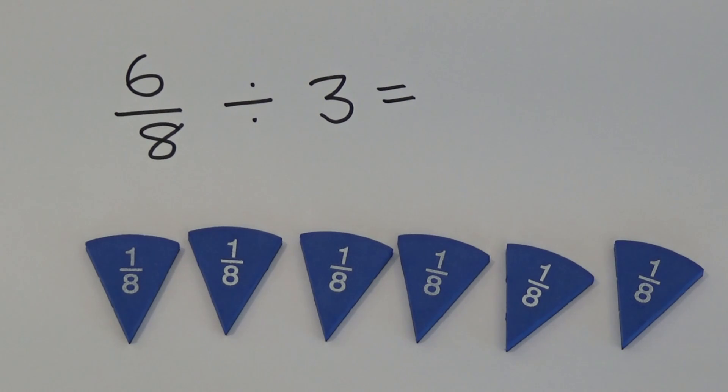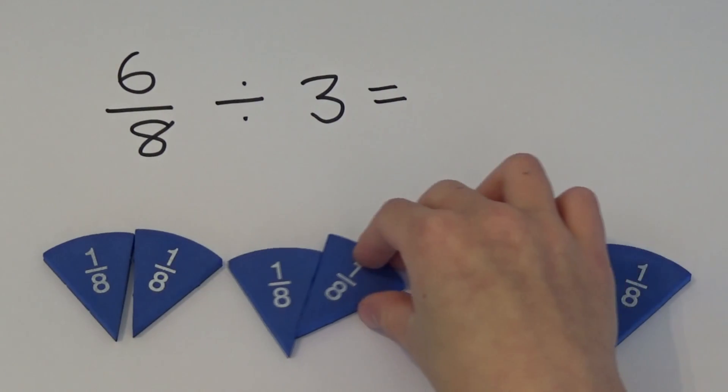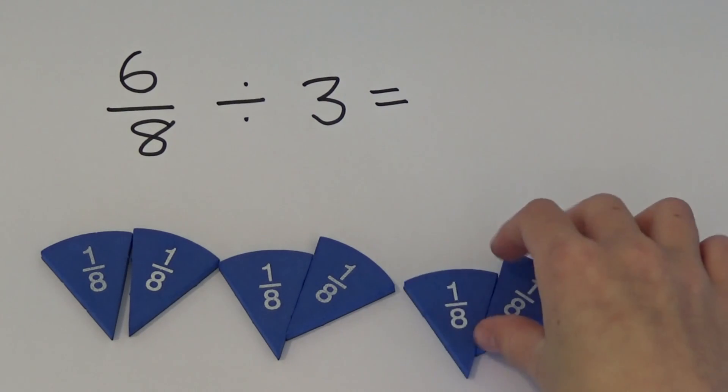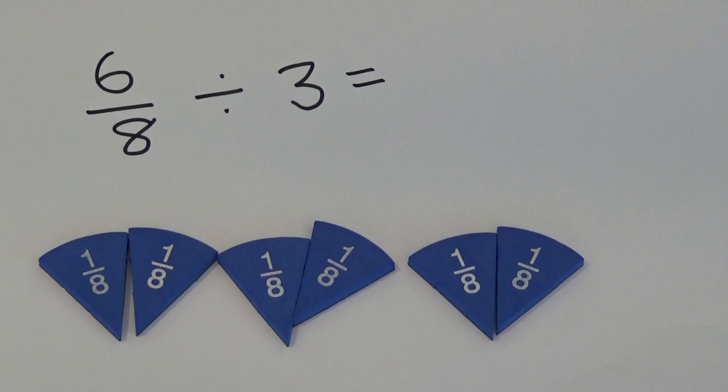If I'm dividing by three, I need to share my six pieces between three people. If I share the amount between three, each person would get two eighths. So six eighths divided by three equals two eighths.